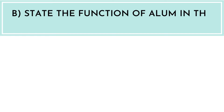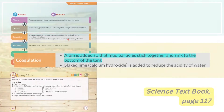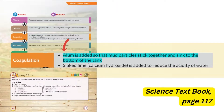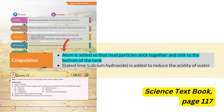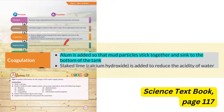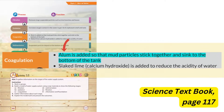Next question: State the function of alum in the water purification process. Still on the same page in the Science Textbook, it is written that alum is added so that mud particles stick together and sink to the bottom of the tank.